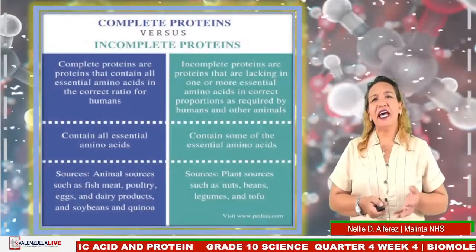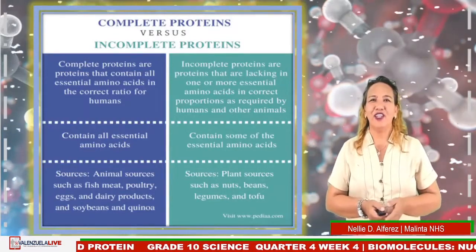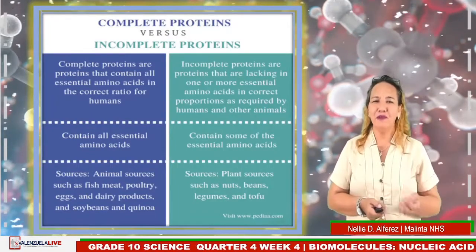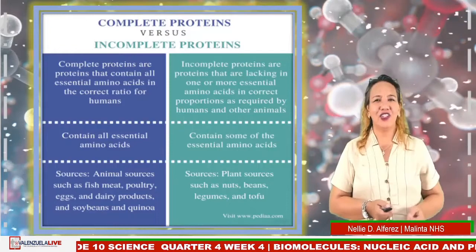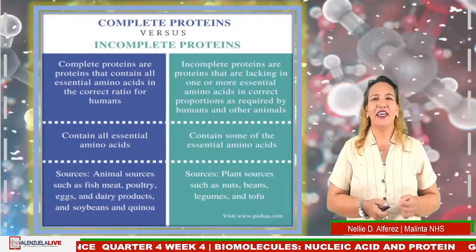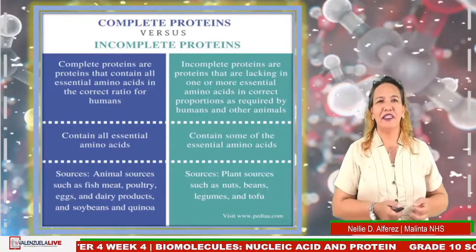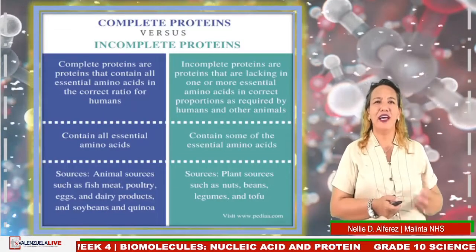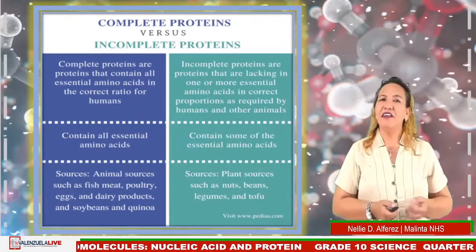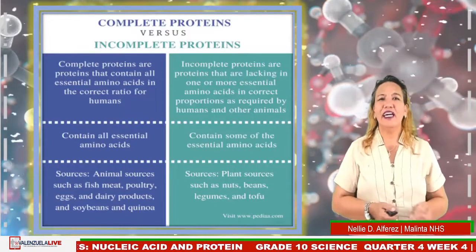Proteins can be classified as complete and incomplete. Complete proteins contain all essential amino acids in the correct ratio for humans. Sources include animals such as fish, meat, poultry, eggs, dairy products, soybeans, and quinoa. Incomplete proteins lack essential amino acids in the correct proportion required by humans and other animals. Sources include plants such as nuts, beans, legumes, and cocoa.